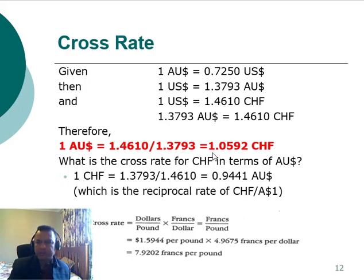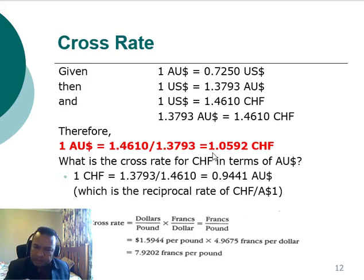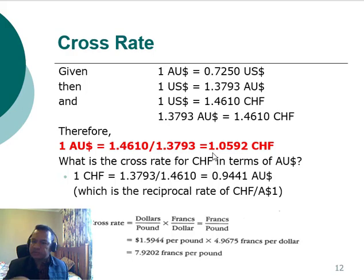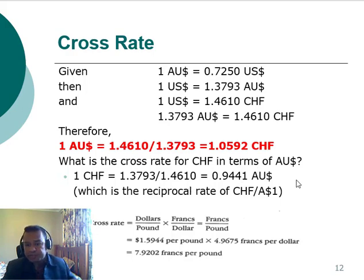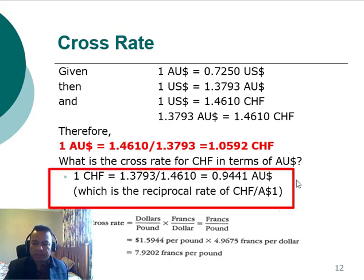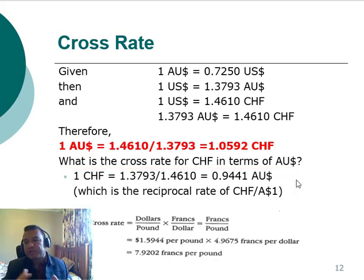Take out your calculator and check the cross rate — this is a very interesting calculation. Check the current Australian dollar value against the US dollar and find the cross rate at today's price. In this calculation, one Australian dollar is purchasing 1.0592 Swiss Francs. So if asked what is the cross rate for Swiss Franc in terms of Australian dollar, one Swiss Franc is purchasing about 0.9441 Australian dollars. This is how we calculate the cross rate.